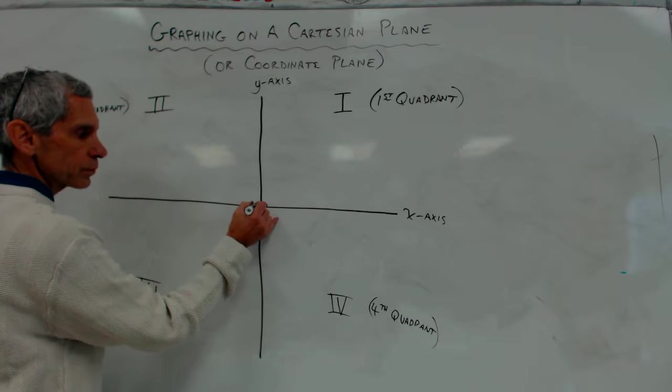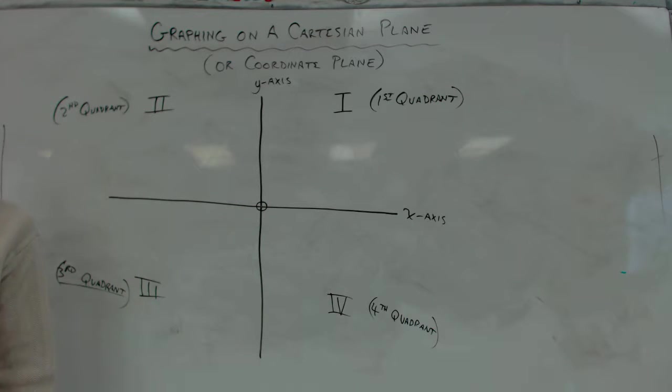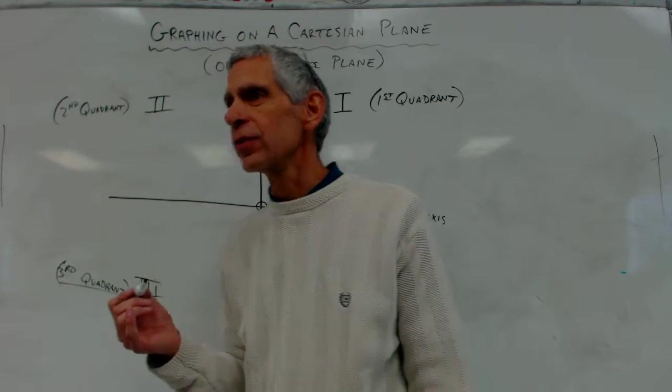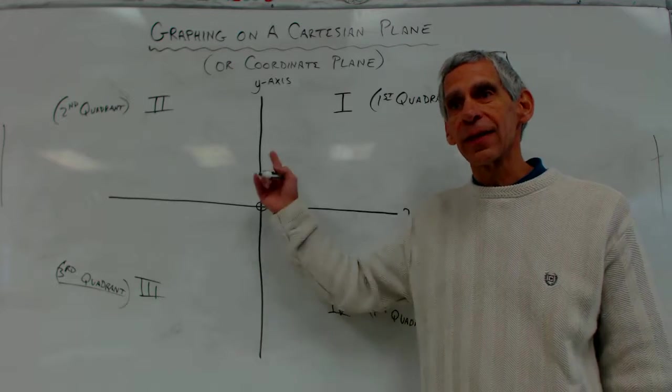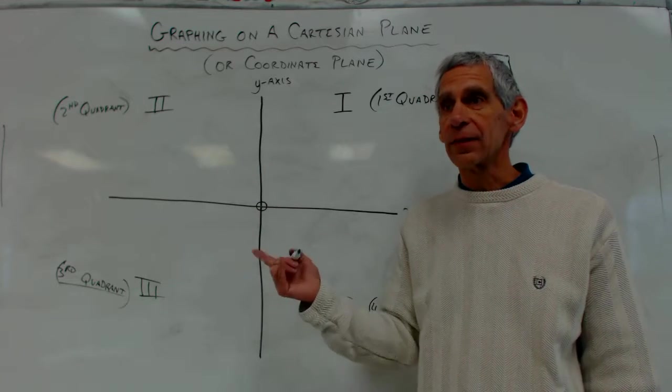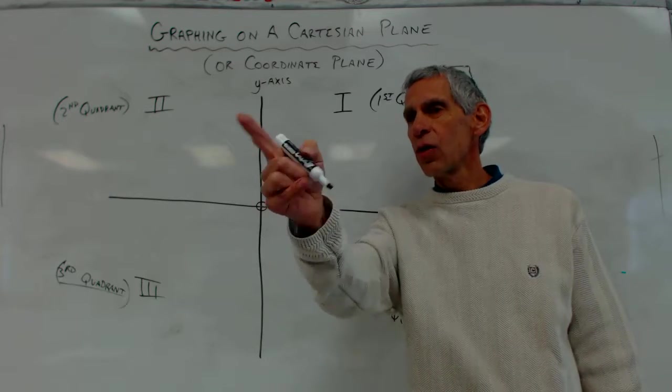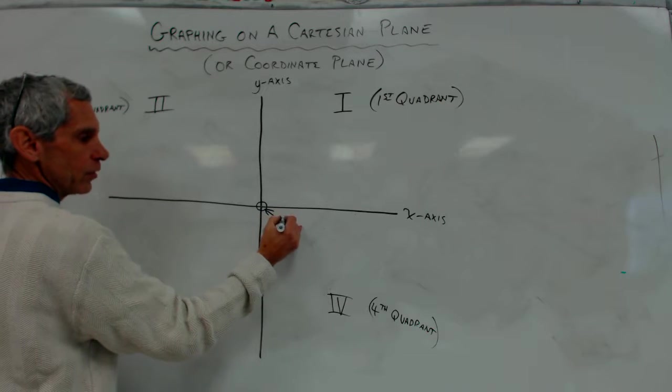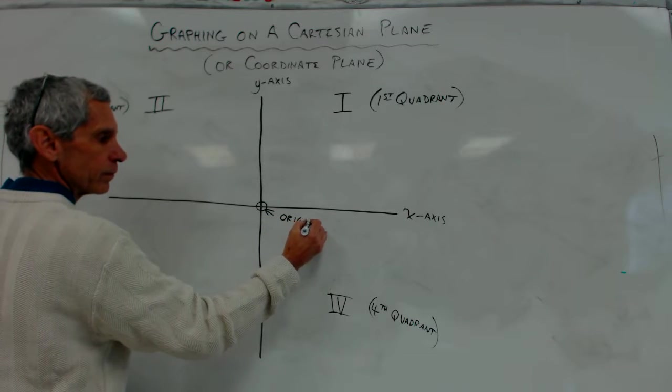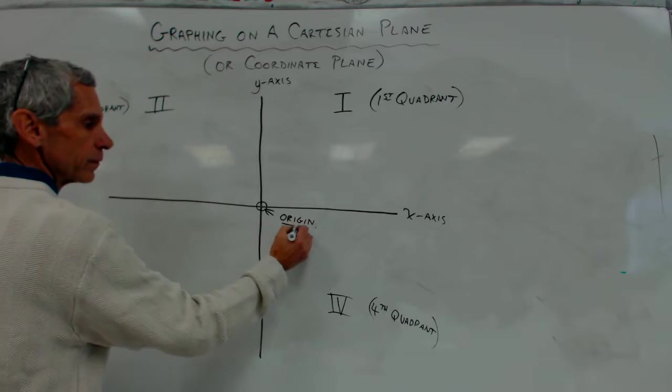This, right here, where the two axes intercept, what are they called? Do you know? What's that called? The intercept. Well, sort of. It is the place where the x-axis intercepts with the y-axis, it's true. It's not called that, though, it's called the origin, yes. It's called the origin. This is called the origin.